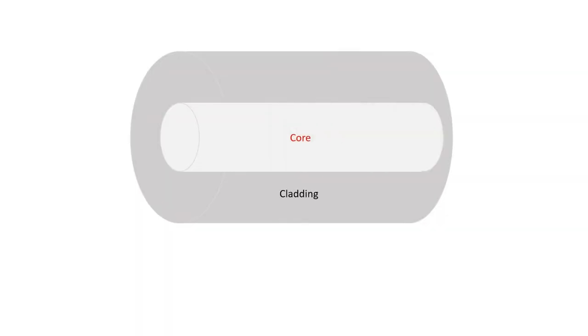Today we're talking about fiber optics. A fiber optic strand is made of glass or plastic and it's as thin as a human hair. Every strand is made up of two layers: a core and a cladding. These two layers have different refraction indices, so that if we have a ray of light traveling inside the core, it will be reflected when it hits the edge between the core and the cladding.